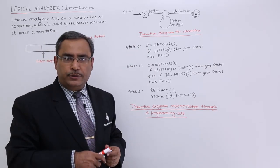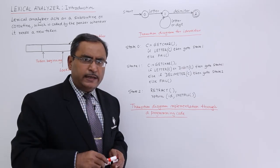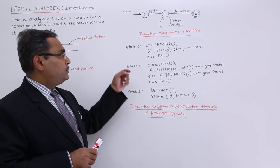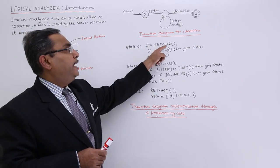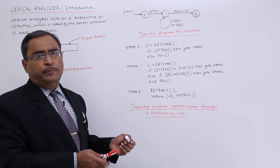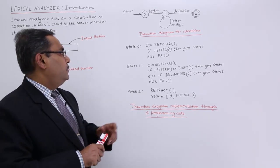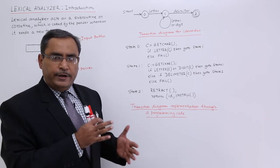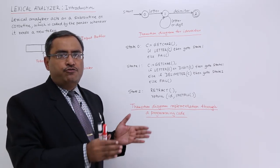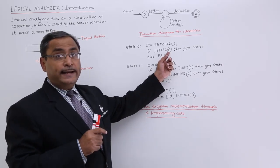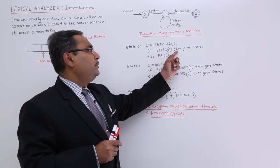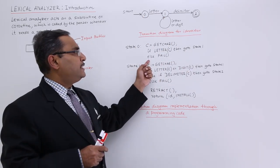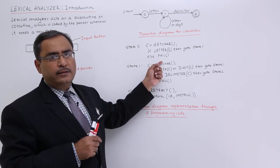But this diagram cannot be fit to a computer, so obviously against this particular diagram we must write some program code. There is a transition diagram implementation through programming code. State 0: c equals getchar, which means it is reading one character. The character can be of type letter, digit, or some other. Now, if letter(c) — that means if this character is of type letter — letter(c) will return a boolean, either true or false. If it finds a letter it returns true, otherwise false. Then go to state 1. If you get a letter, the transition takes place from state 0 to state 1; otherwise else fail, meaning the fail function is called to handle the error-handling routine.